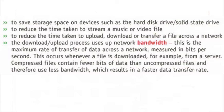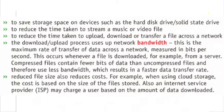The download upload process uses network bandwidth. This is the maximum rate of transfer of data across a network, measured in bits per second. This occurs whenever a file is downloaded, for example, from a server. Compressed files contain fewer bits of data than uncompressed files, and therefore use less bandwidth, which results in a faster data transfer rate. Reduced file size also reduces costs. For example, when using cloud storage, the cost is based on the size of the file stored. Also, an internet service provider, ISP, may charge a user based on the amount of data downloaded.